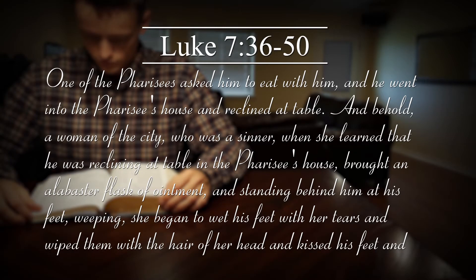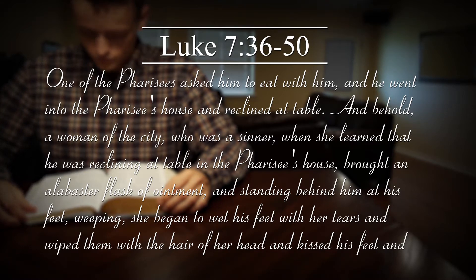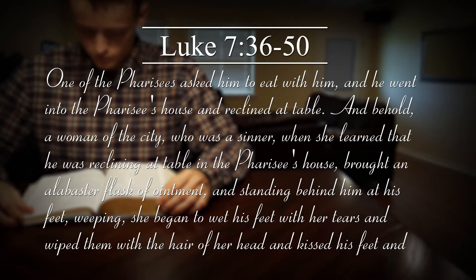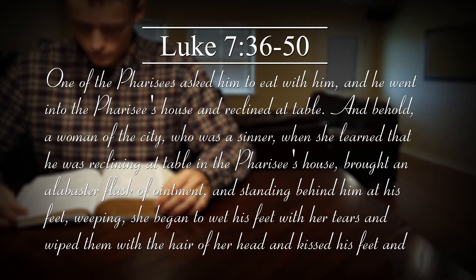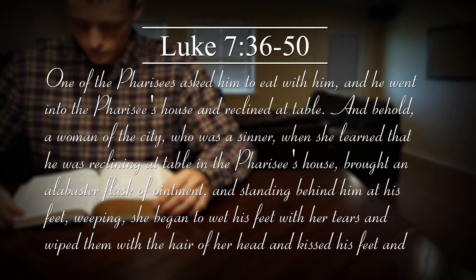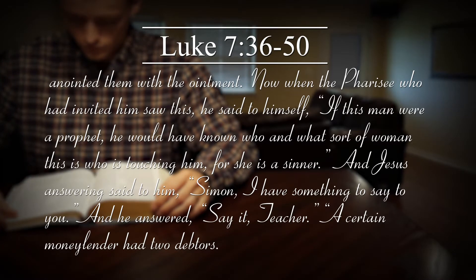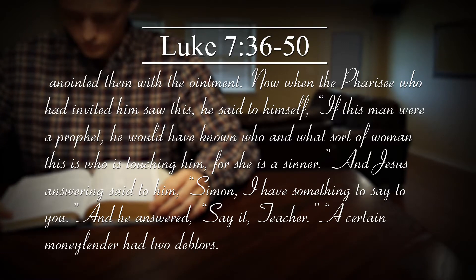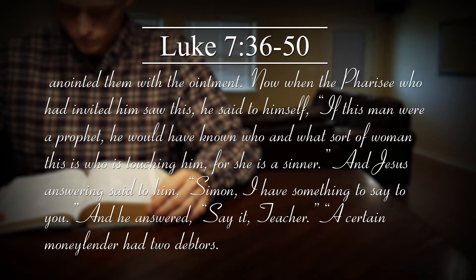In Luke chapter 7, beginning in verse 36, here's what Luke writes: One of the Pharisees asked him to eat with him, and he went into the Pharisee's house and took his place at the table. And behold, a woman of the city, who was a sinner, when she learned that he was reclining at table in the Pharisee's house, brought an alabaster flask of ointment, and standing behind him at his feet, weeping, she began to wet his feet with her tears and wiped them with the hair of her head, and kissed his feet and anointed them with the ointment. Now when the Pharisee who had invited him saw this, he said to himself, If this man were a prophet, he would have known who and what sort of woman this is who is touching him, for she is a sinner.